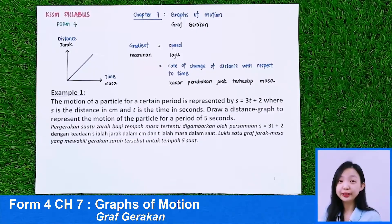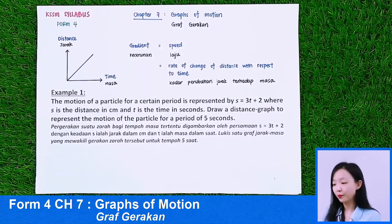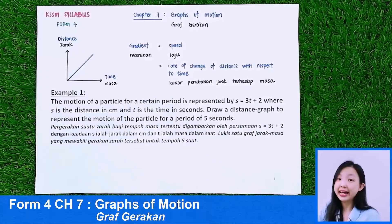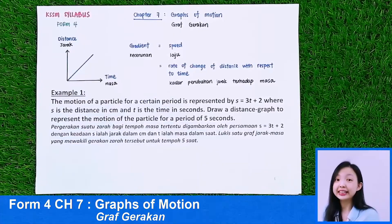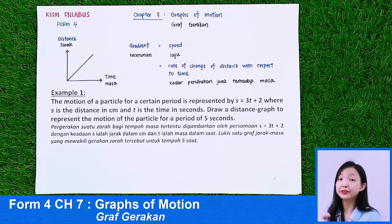In this chapter, we will learn about two graphs. One is the Distance-Time Graph, and the other is the Speed-Time Graph. Before I start, let's flash back to something you learned in Form 2.